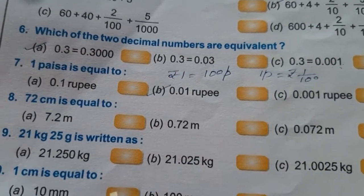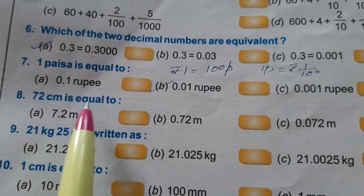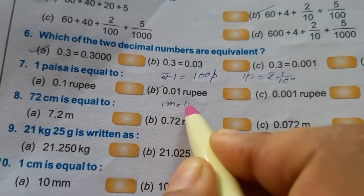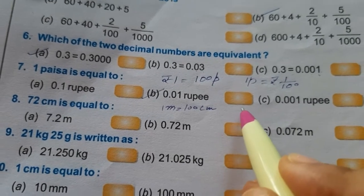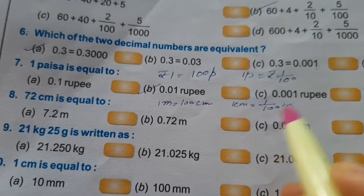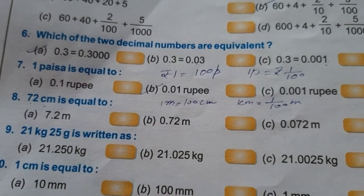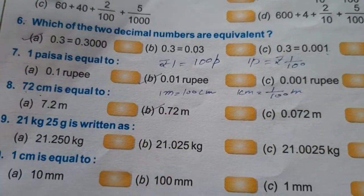Next is 72 centimeter is equal to. We have to convert it into meters. We know in 1 meter there are 100 centimeters, or in 1 centimeter there are 1 by 100 meters. So in 72 centimeters there will be 72 by 100 meters. So 72 by 100 will come out to be 0.72.